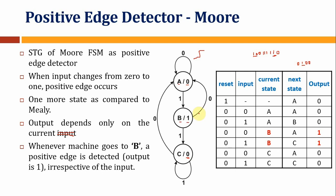The state transition graph and state table are now developed. An important note: when you are in state B, regardless of input 0 or 1, the output is determined by the current state. In state B with input 1, the next state is B. In state B with input 0, next state becomes A. The next state is determined by both current state and input, while the output is determined by the current state alone in this Moore machine.